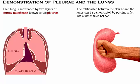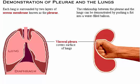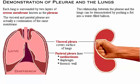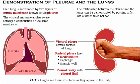The inner part of the balloon, which wraps around the fist, represents the visceral pleura — the part of the pleura which covers the surface of the lungs. The outer part of the balloon represents the parietal pleura, which lines the mediastinum, the diaphragm, and the thoracic wall. The visceral and parietal pleura are actually a continuation of the same membrane. The water-filled space between the two layers represents the pleural cavity, which contains pleural fluid.